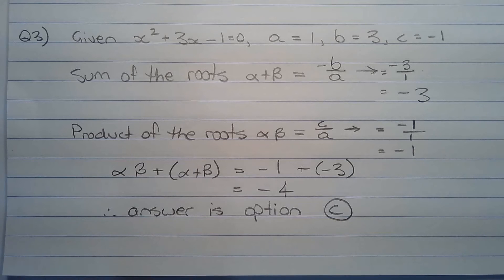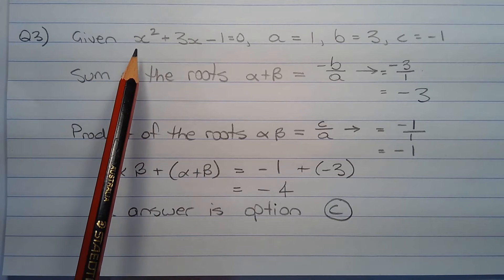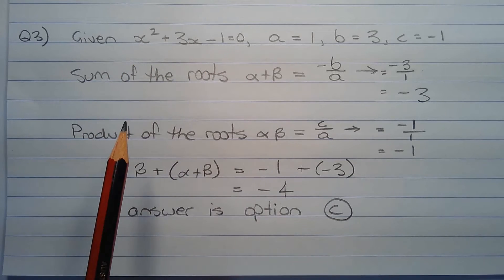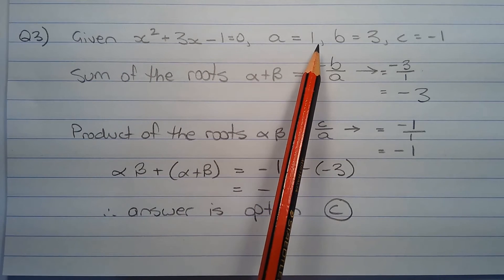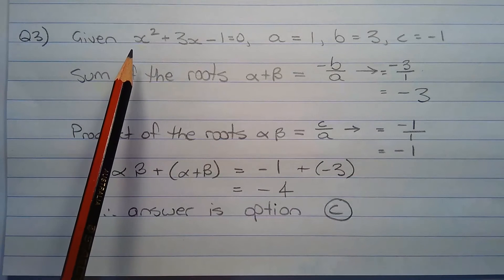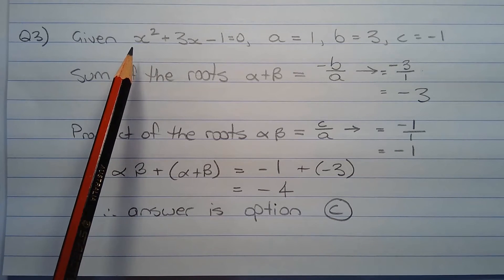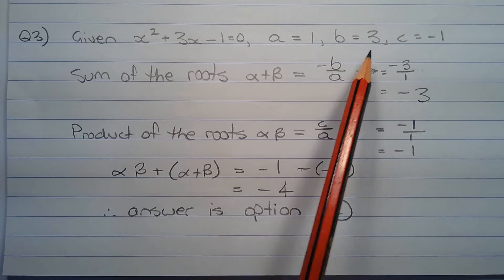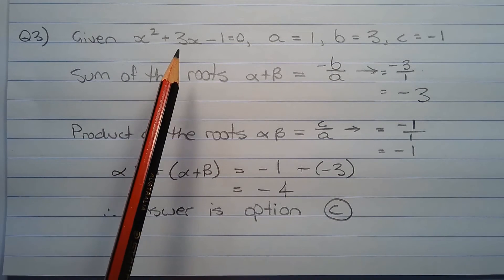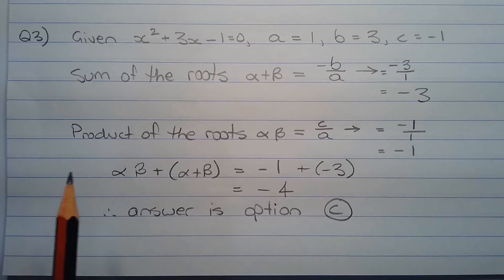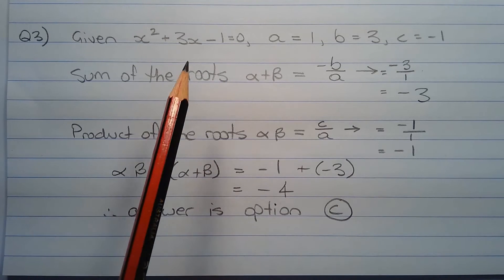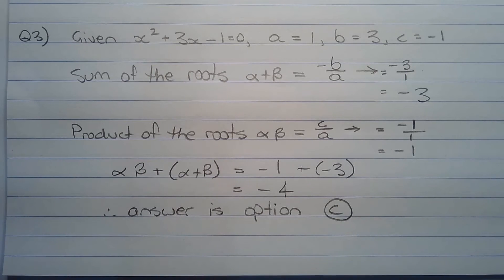Given the quadratic equation x squared plus 3x minus 1 equals 0, a equals 1 which represents the coefficient of x squared, b equals 3 which represents the coefficient of x, and c equals negative 1 which represents the constant term.